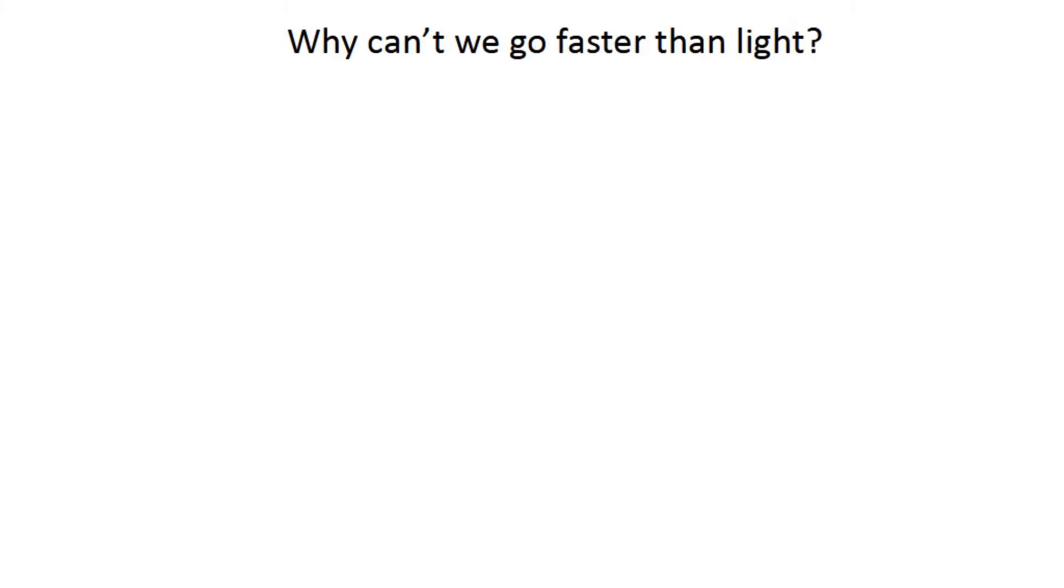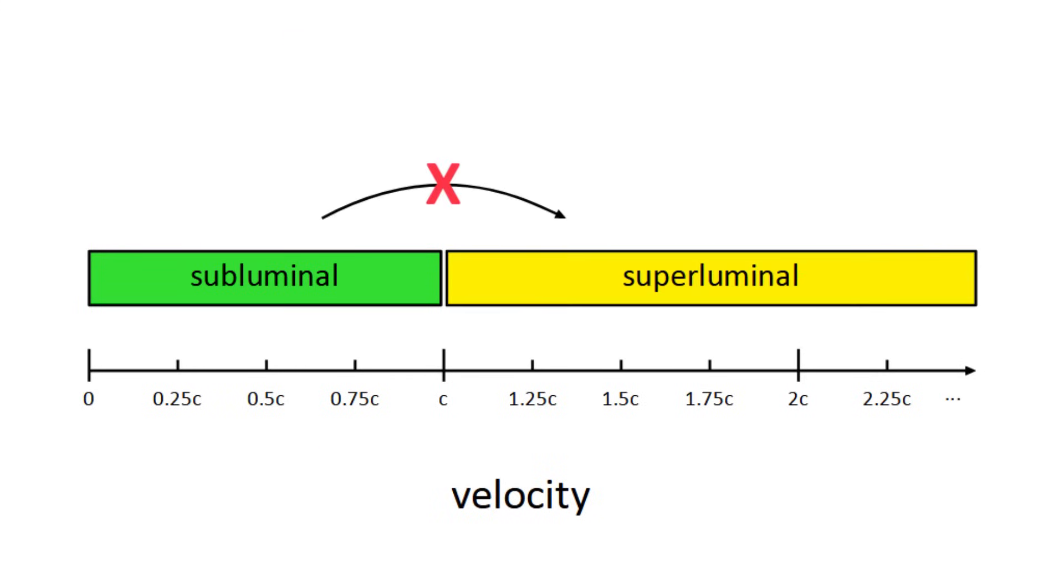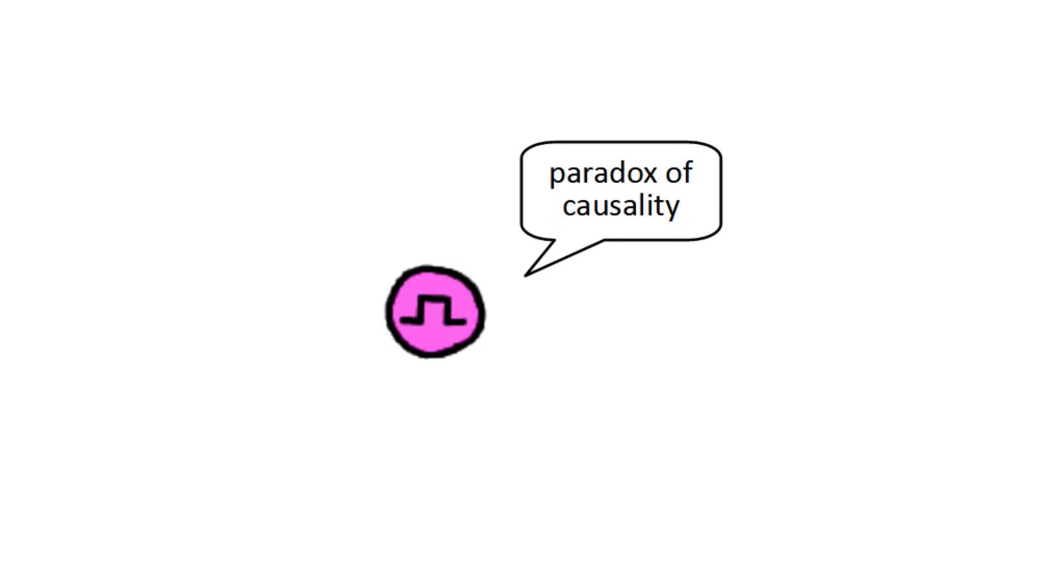So now that we're familiar with the formula, we can answer the question from the beginning. Why can't we move faster than light? Well, it's because no matter how much velocity you add to something, the formula never allows it to exceed c. Now this does explain why we can't cross the threshold past the speed of light, but what about something that's faster than light to begin with? Well these types of particles are called tachyons, but they're purely hypothetical. If we had faster than light communication, it would lead to something called a paradox of causality.